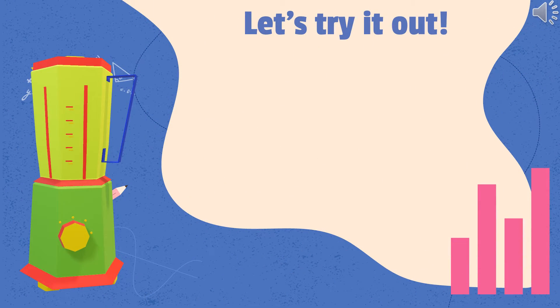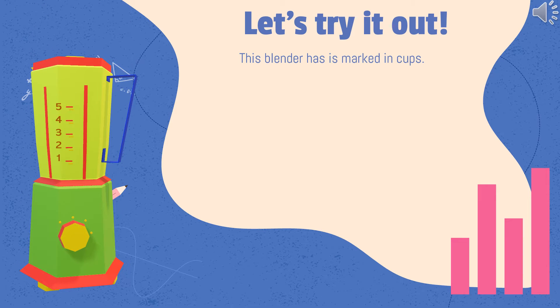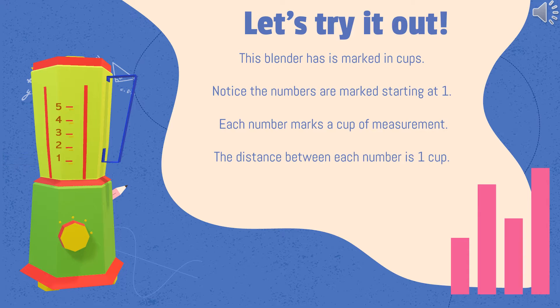Let's try it out. Say we have a blender. The blender is marked to show cups. Notice the numbers are marked starting at one, right here. And each number marks another cup of measurement. The distance between each number is one more cup.